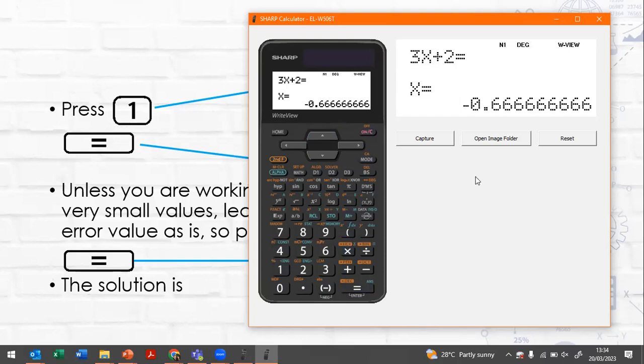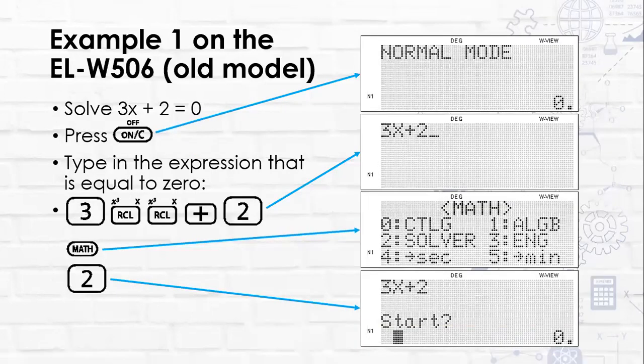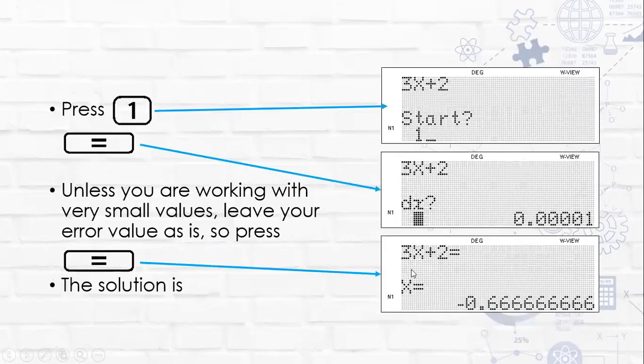Now you can use the old EL-W506 to solve. The only difference is that instead of using second function d2 you would now use your math button and press 2 for solver and then it works exactly the same way. Press 1 and leave your error as is and then you'll see that it gives you the same solution.